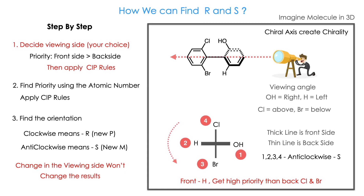So how we can find it? We will go step by step. First, you have to decide the viewing angle — that is the place where you see the molecule. Then you have to choose the priority for front side atoms to the back side atom. Then you have to apply the CIP rule, using atomic number. Then you have to find the orientation.